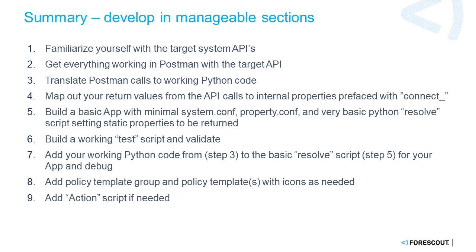Then you're going to build out your basic app — build a minimal system.conf and property.conf and a very basic Python resolve script, setting static properties to be returned. You don't want to make this complicated at the beginning — there are all kinds of things that can go wrong. So just build it basic, and then you can add things on as you go and you can easily tell where you broke something.